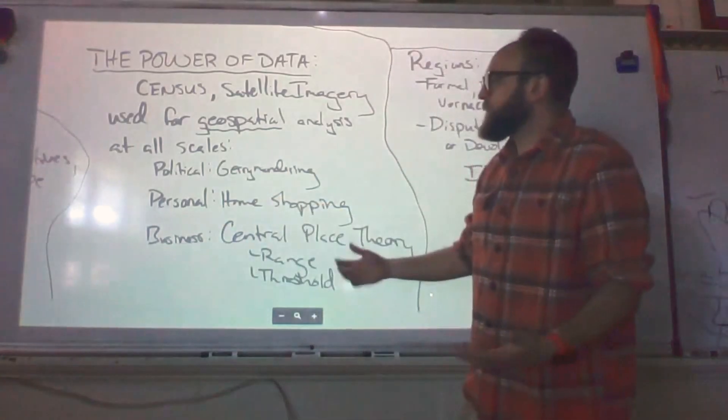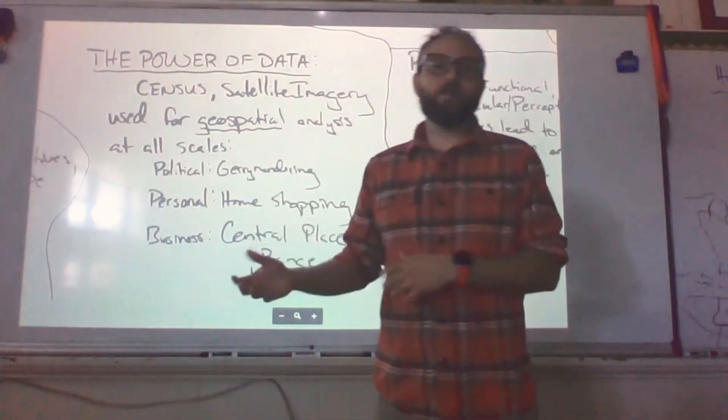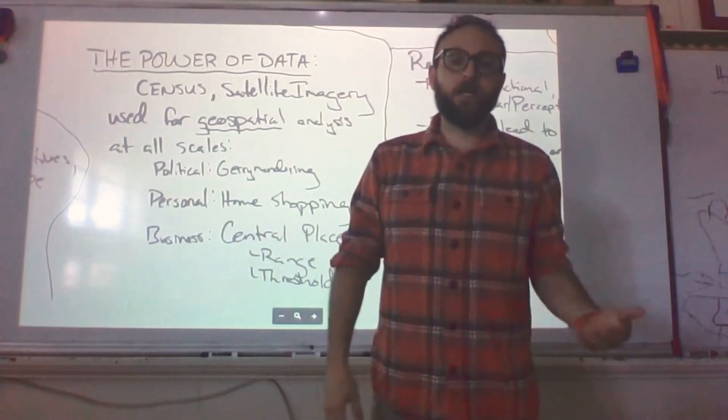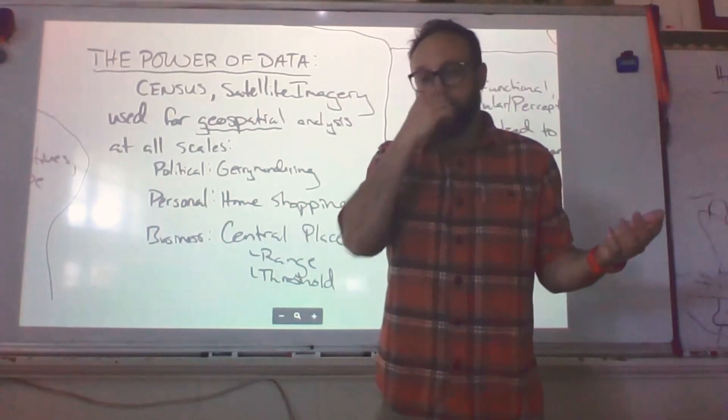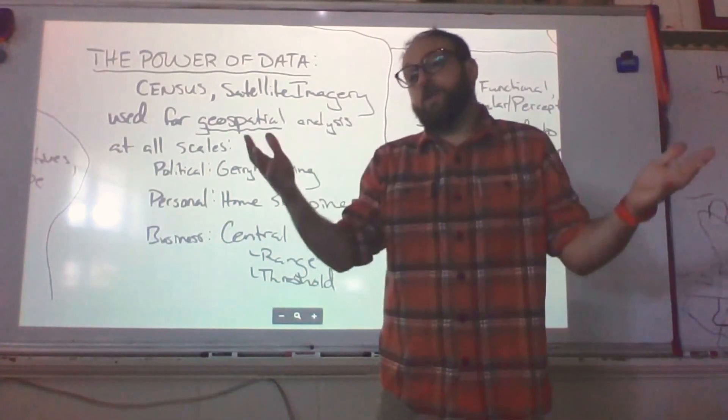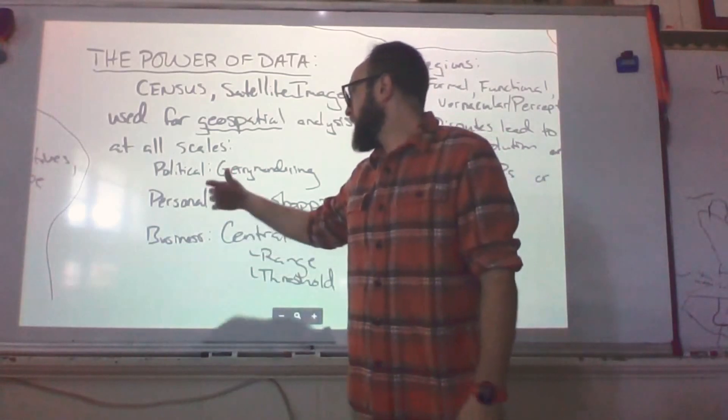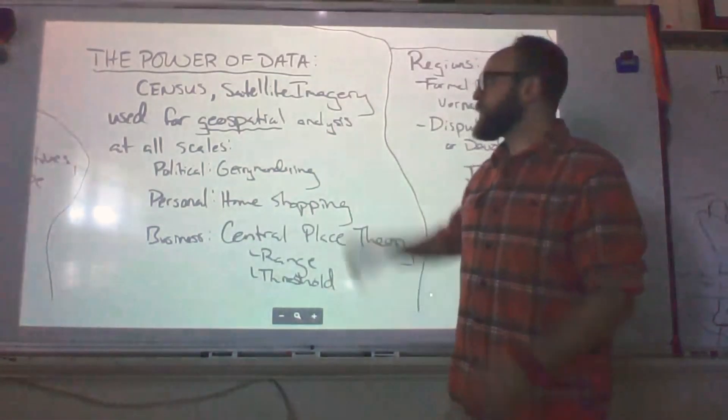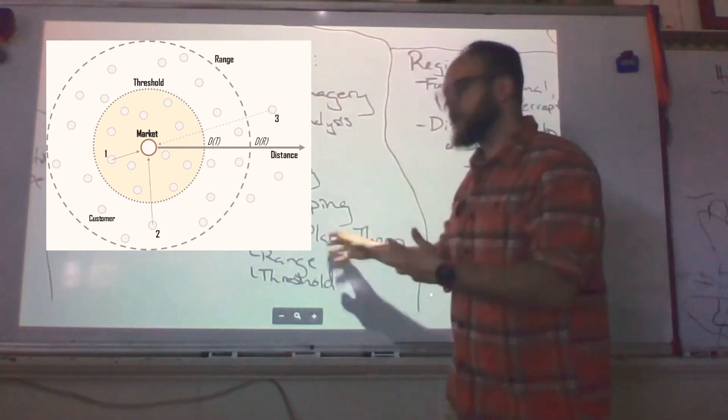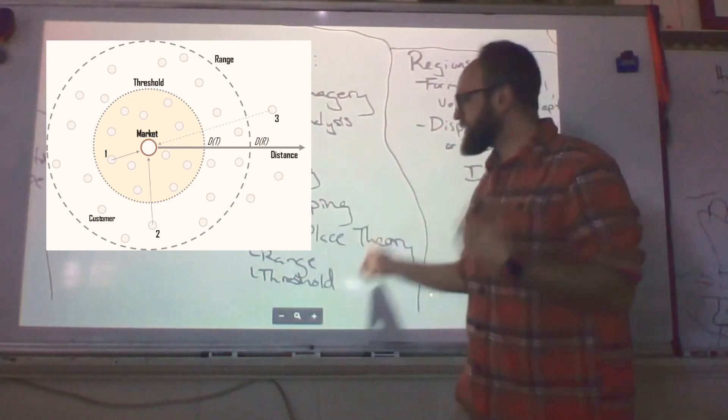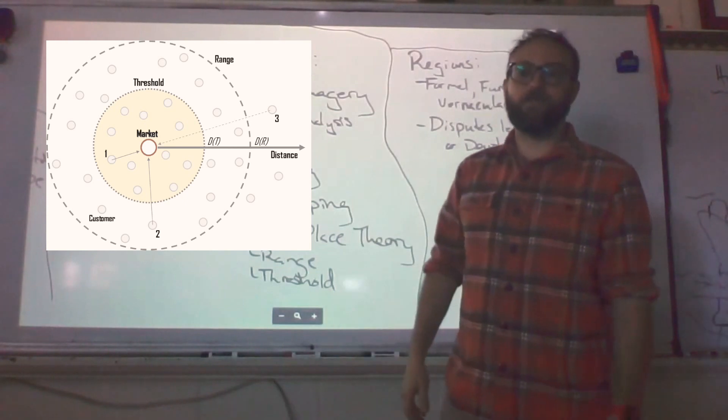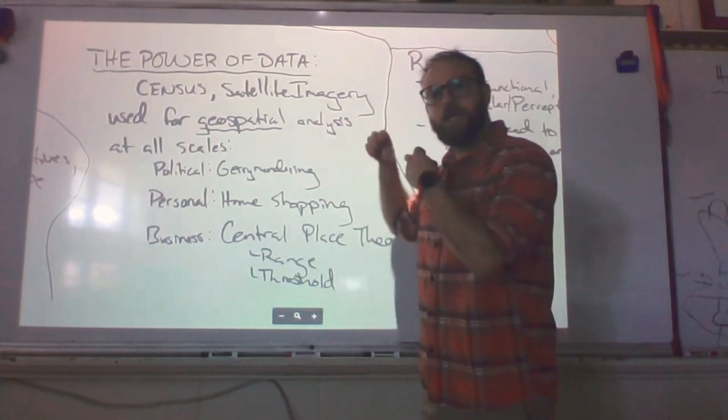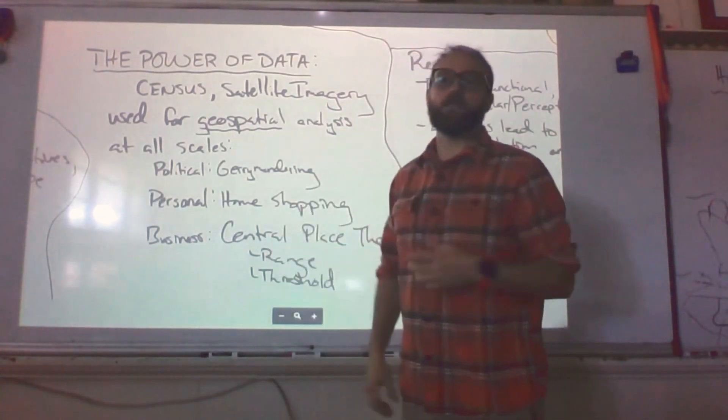Personal. So home shopping. We obviously decide what types of stores go where based on who's living where. So we get a Publix in Alachua because, you know, 10 years ago not a lot of people lived here, but now all of a sudden there are enough people. The market is big enough to justify. And then that kind of ties really nicely with business, which is based on the central place theory, we look to this data to figure out what the maximum range, how far people will travel, and the size of the market necessary for specific businesses. So we make personal buying decisions. We decide how we vote, and also businesses operate based on this data.